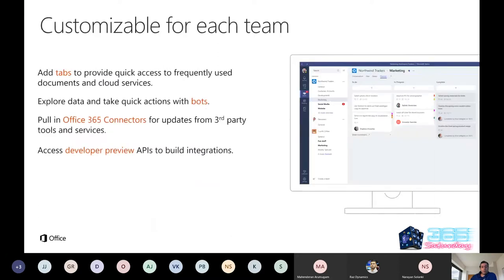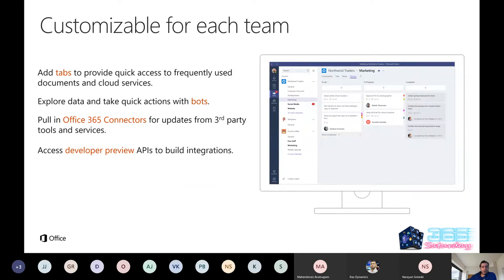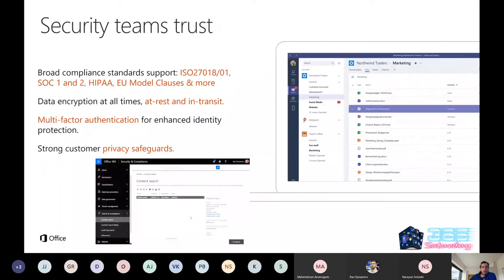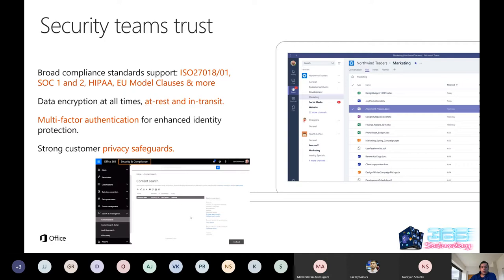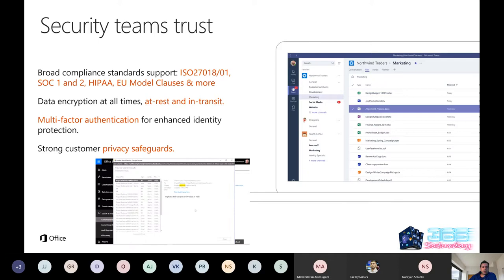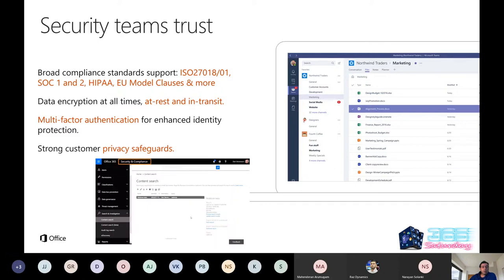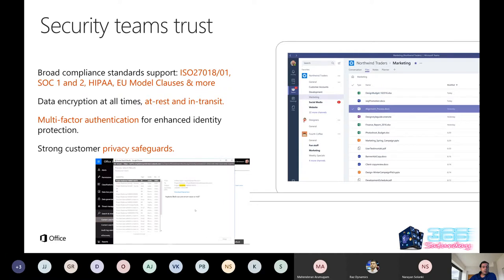For customization, you can have tabs for quick access to information in a team channel. You can explore data with bots, connect using Office 365 connectors or third-party tools, and access developer preview APIs to build integrations. Regarding security, Teams is compliant with standards including ISO, SOC, HIPAA, and more. All data is encrypted at rest and in transit, all communications are completely encrypted, and you have multi-factor authentication and privacy safeguards.